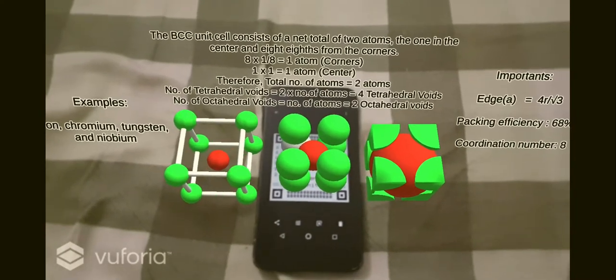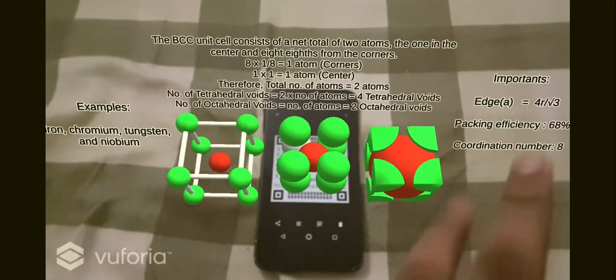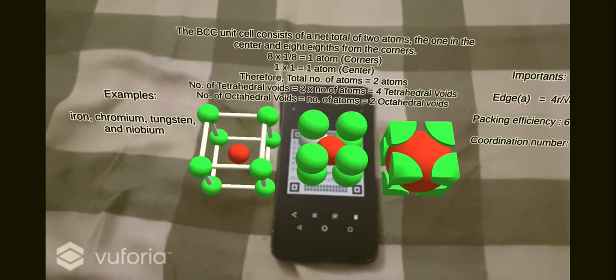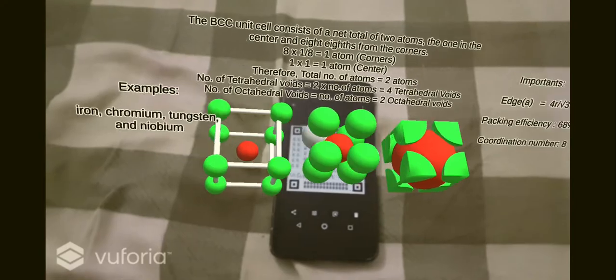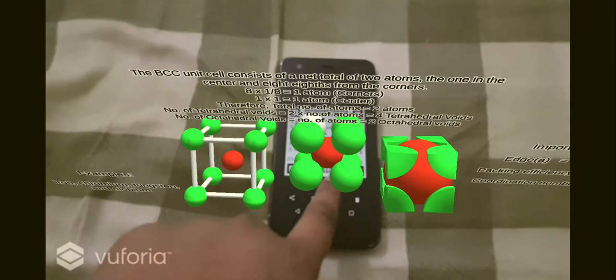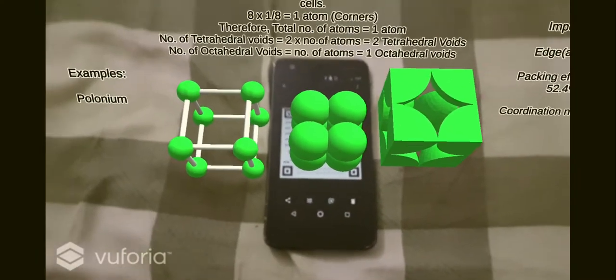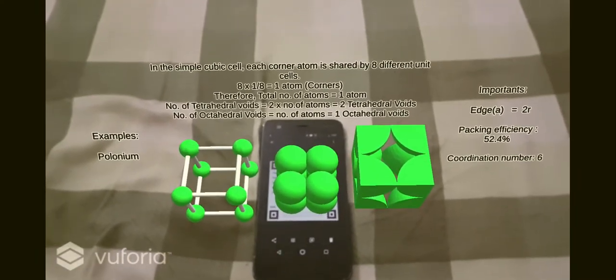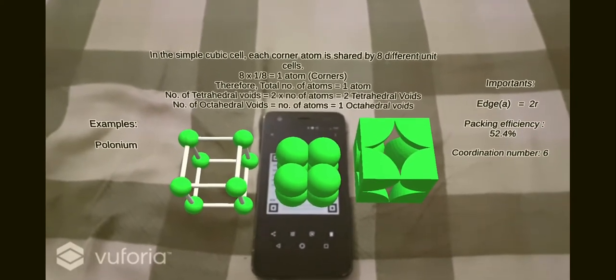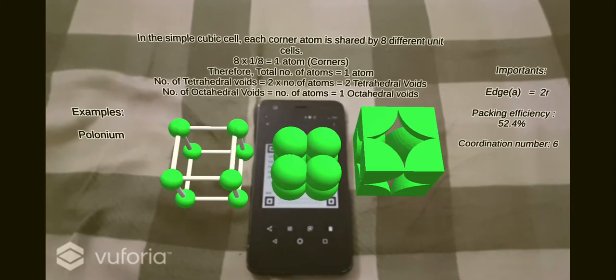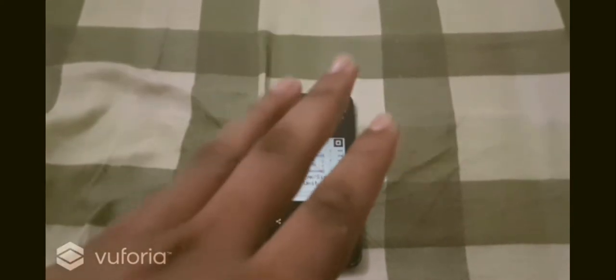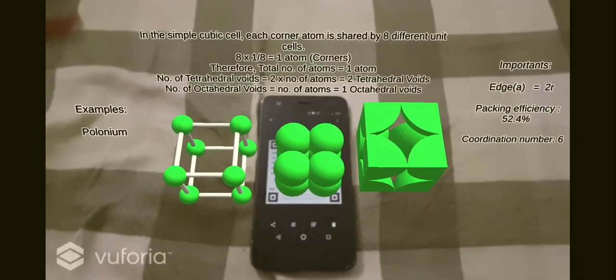There's the formula edge equals 4r by root 3, showing the relation between edge length and the radius of the atomic sphere. There are examples, the number of tetrahedral voids and octahedral voids. Let's shift to the primitive cubic unit cell. The packing efficiency, coordination number, a equals 2r. This model doesn't have a red color because there are no atoms other than the corners. The example is polonium.